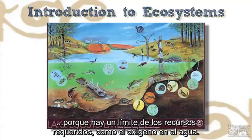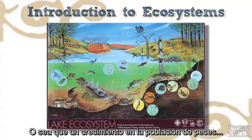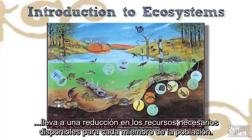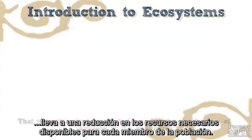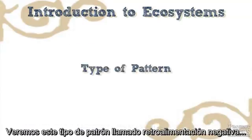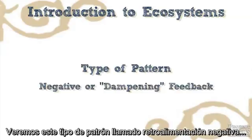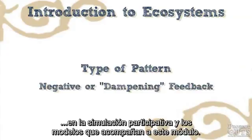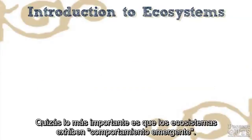The increase in the fish population leads to a reduction in the necessary resources available to each member of the population. That reduction, in turn, leads to moderation in the rate of increase in the population. We will see this type of pattern, called negative or dampening feedback, in the participatory simulation and models that accompany this module.